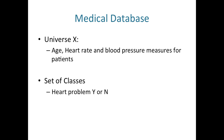Let's give an example. Imagine our universe is a medical database. We have different information — age, heart rate, and blood pressure for different patients. And then for each patient, we have a label about whether the patient has a heart problem or not. So for each patient, we have age, heart rate, blood pressure, and then the dependent variable we are trying to classify, which is going to be a Y or an N depending on whether the patient has a heart problem.